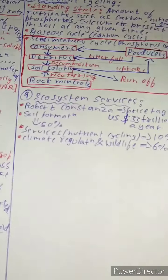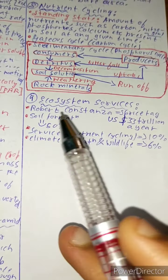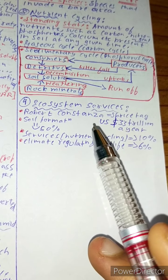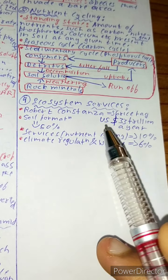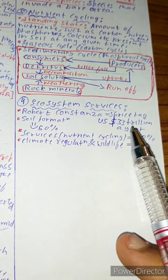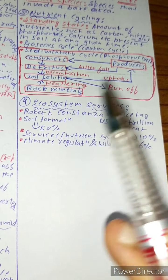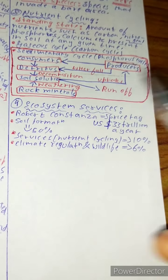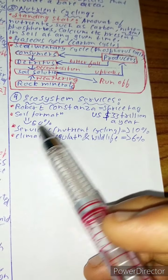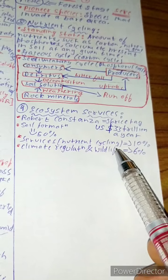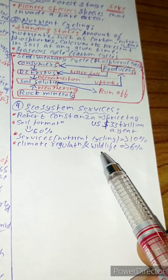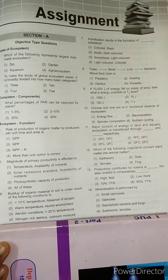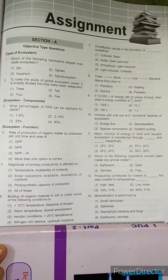The last topic of our chapter is ecosystem services. Scientist Robert Costanza put a price tag of US dollars 33 trillion a year for all the services which the environment provides us. First of all, the soil formation accounts for 50 percent of the ecological services, and services of nutrient cycling 10 percent, and climate regulation of wildlife is 6 percent.